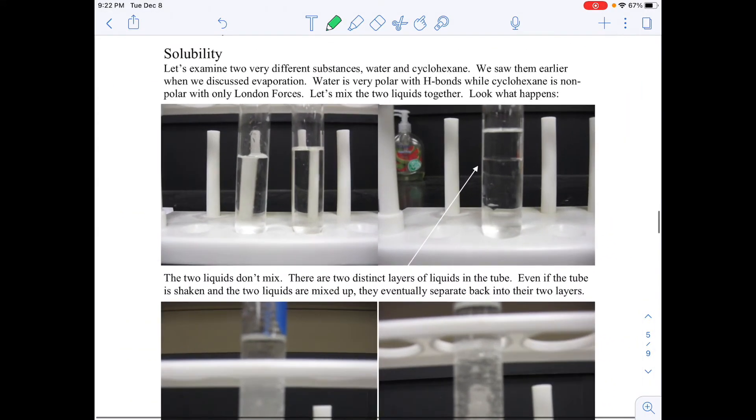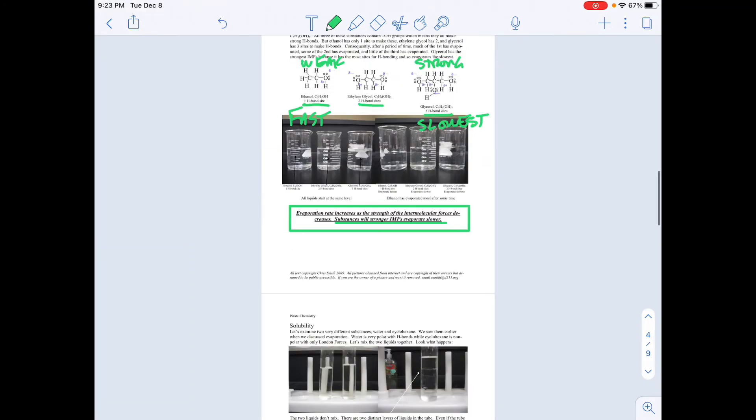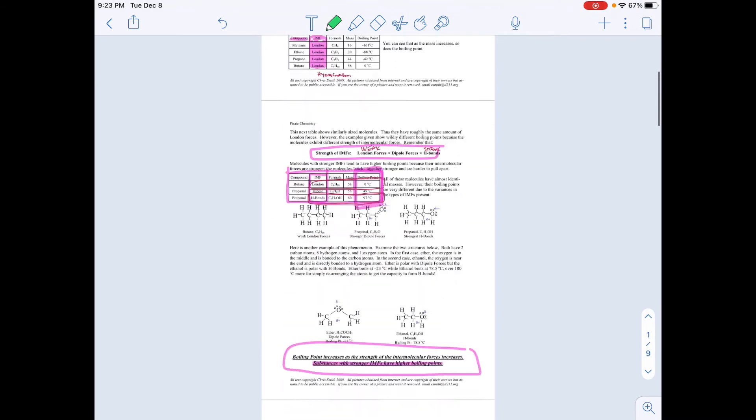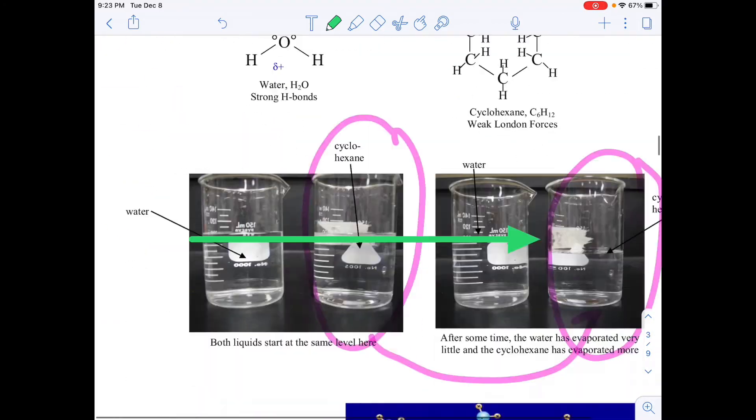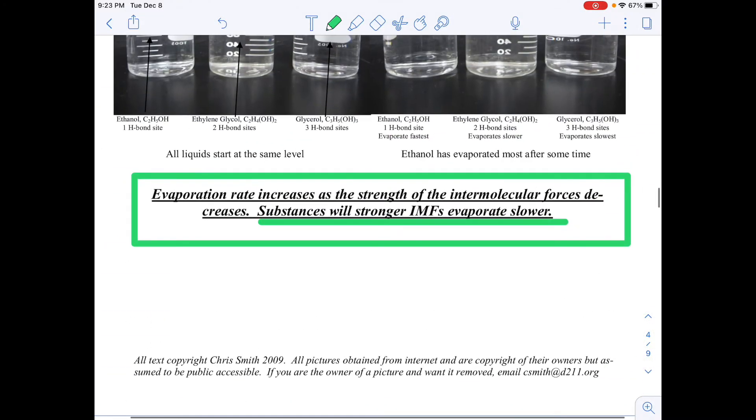Solubility, last rule. So far we've talked about boiling point. Higher the IMF, higher the boiling point. Evaporation, higher the IMF, slower evaporation. So the wording gets weird and I want to review that. Substances with stronger IMFs, higher boiling points. If I have a strong IMF, it takes a lot of energy to break that off. It's going to take a long time to boil. If I have a strong IMF, it's going to take a long time to evaporate. We just have to make sure we keep that wording straight when we look at it.